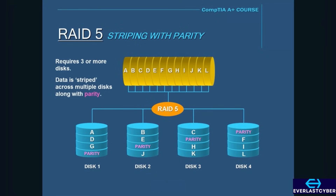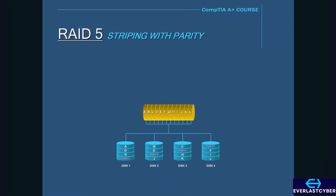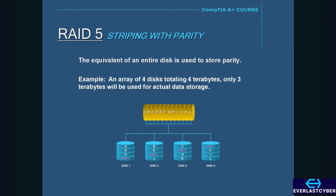There is a downside to RAID 5: since the equivalent of an entire disk is used to store parity, it reduces the collective amount of data that can be stored in the array. For instance, if all four disks were one terabyte each, that totals four terabytes. But in a RAID 5 setup, the total amount used for data storage would be three terabytes, because the equivalent of one entire disk would be used to store parity.